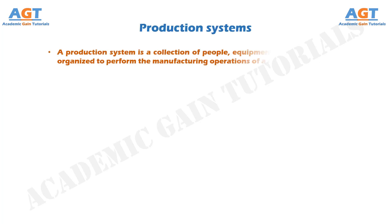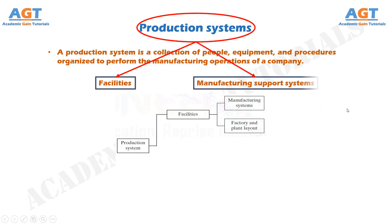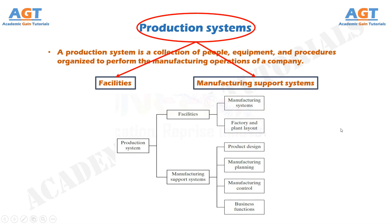A production system is a collection of people, equipment, and procedures organized to perform the manufacturing operations of a company. It consists of two major components. Number one: Facilities — the physical facilities of the production system include equipment, the way the equipment is laid out, and the factory in which the equipment is located. Number two: Manufacturing support systems — these are the procedures used by the company to manage production and to solve the technical and logistics problems encountered in ordering materials, moving the work through the factory, and ensuring that products meet quality standards.